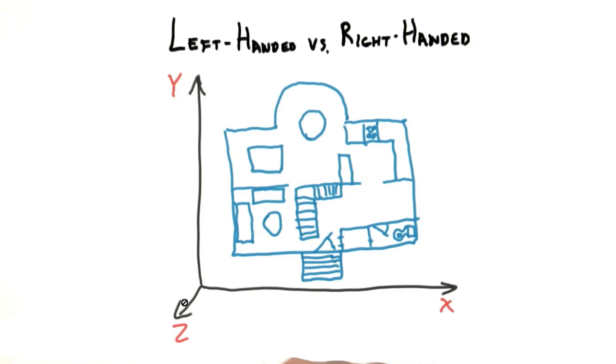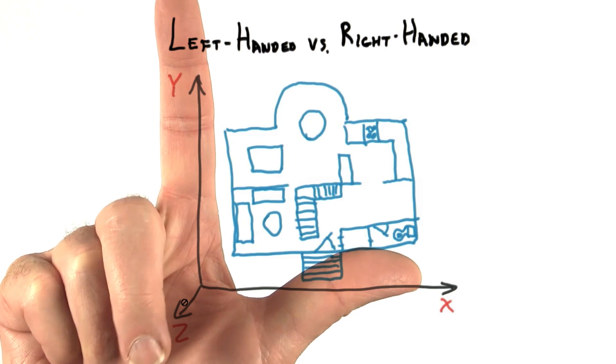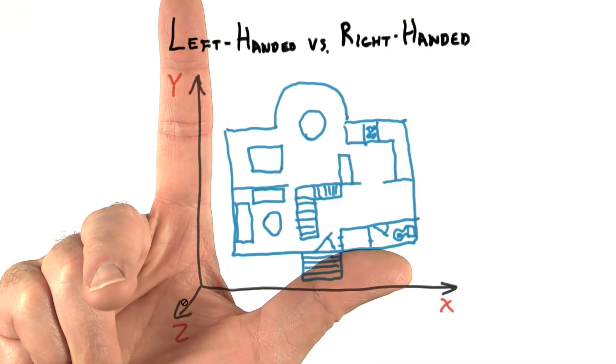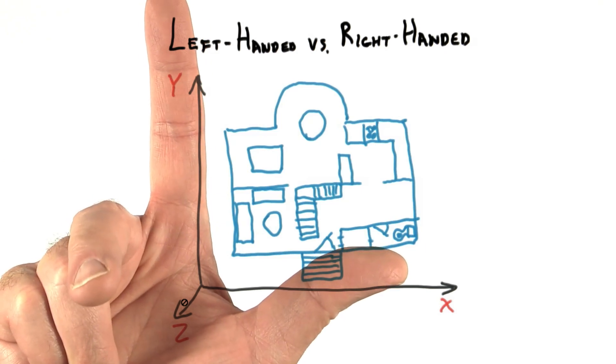Why is this right-handed? Well, if you place your thumb along the x-axis and the index finger along the y-axis, the middle finger is the z-axis and points towards you. You'll notice if you try to do the same thing with your left hand, you can't match up all three axes, at least not comfortably.